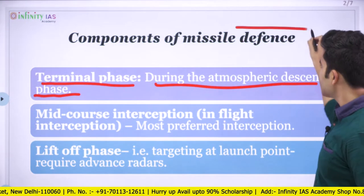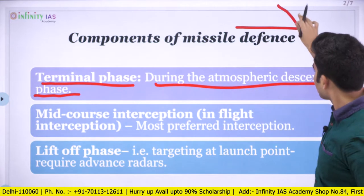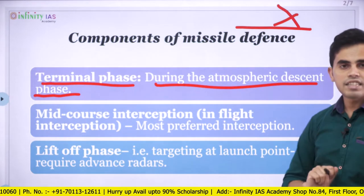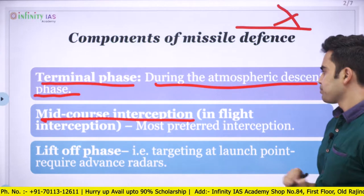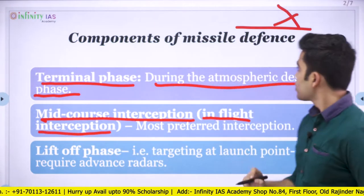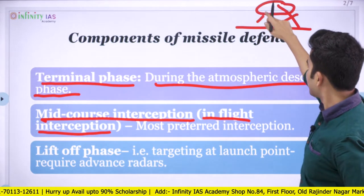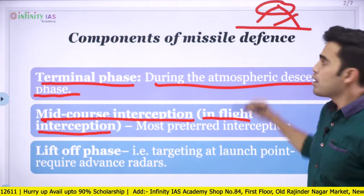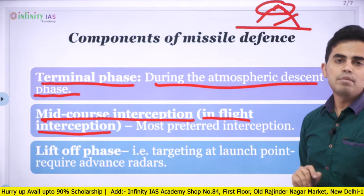The first is the terminal phase — interception during the atmospheric descent phase. We can intercept the missile during atmospheric descent so that it won't reach the earth's surface. Then comes mid-course interception, which is in-flight interception. The missile can be intercepted during its flight path so that it won't even reach the descent phase — it will be intercepted and eliminated before that.